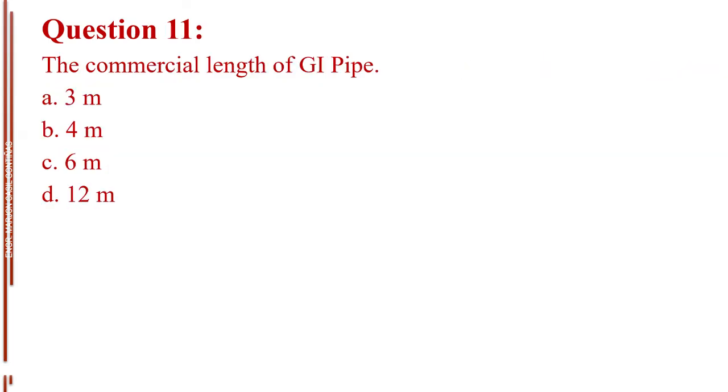Question number 11. The commercial length of GI pipe. Letter A, 3 meters. Letter B, 4 meters. Letter C, 6 meters. Letter D, 12 meters. The answer is Letter C, 6 meters.